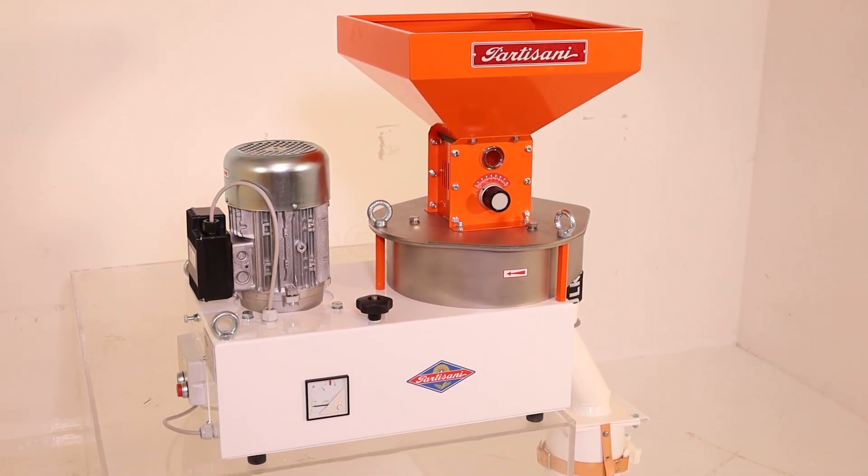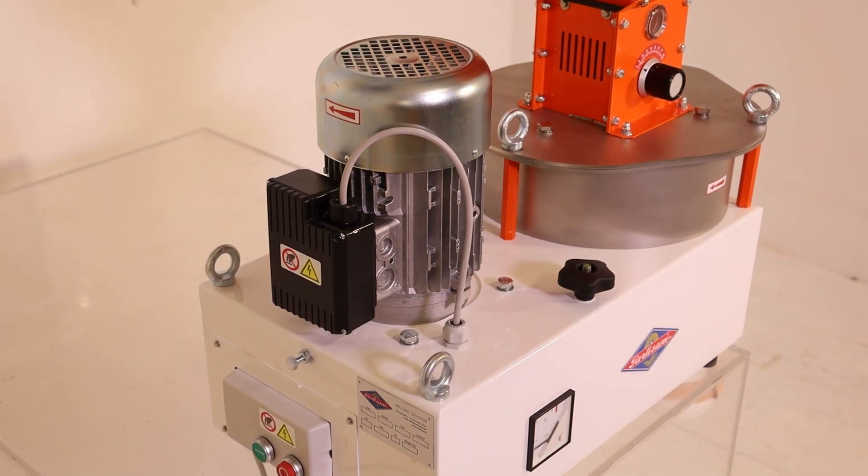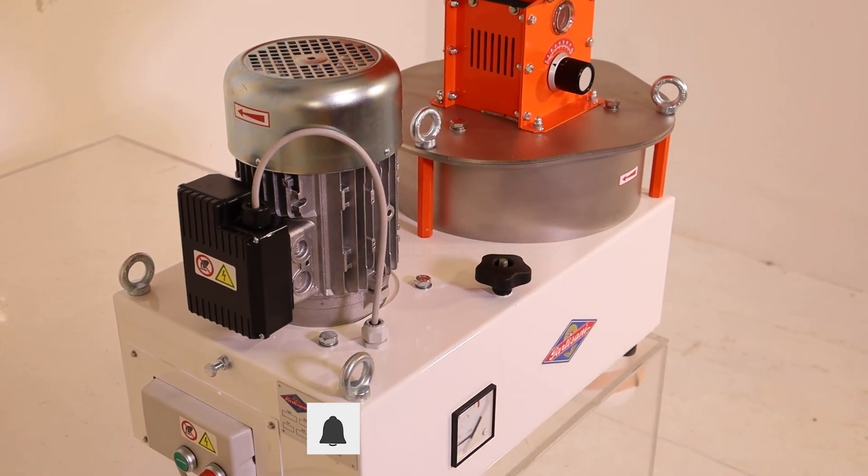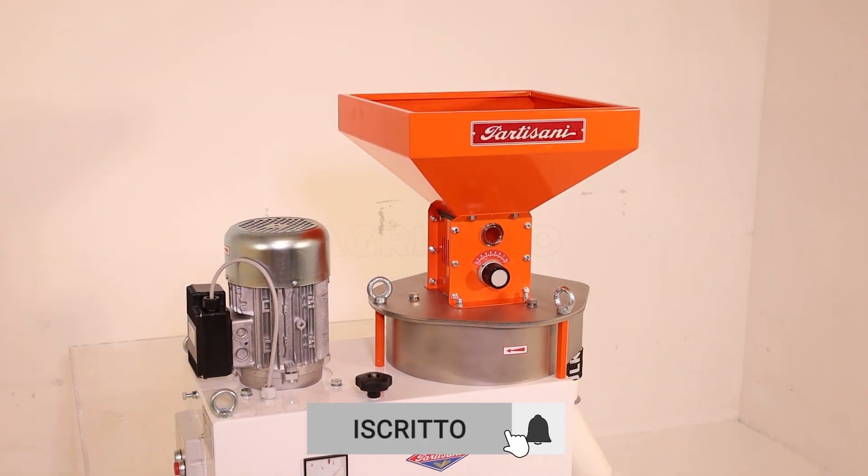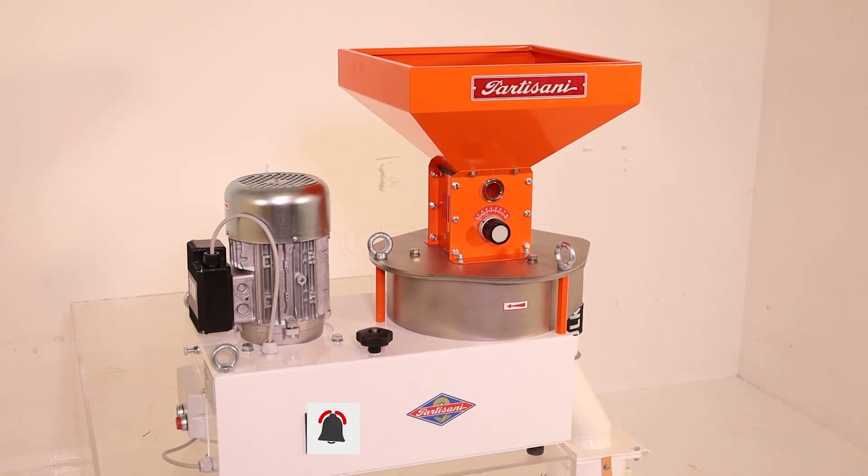Il cuore del meccanismo risiede nelle sue macine, composte da una miscela di smeriglio e silice, entrambi materiali naturali, legate da un agglomerante a base di magnesite.